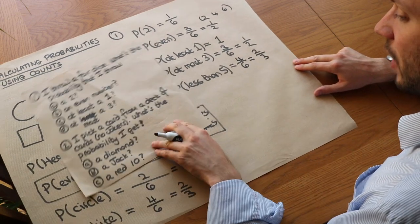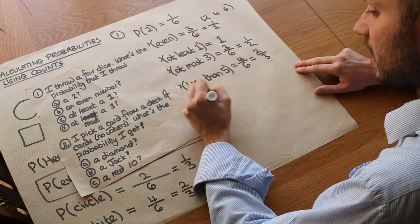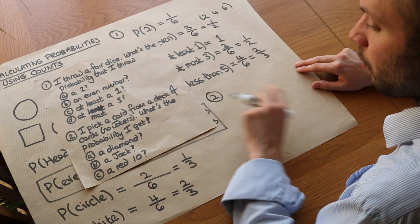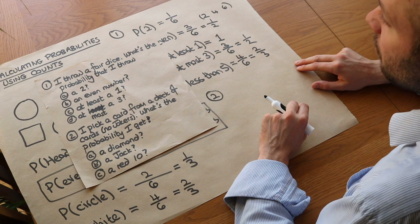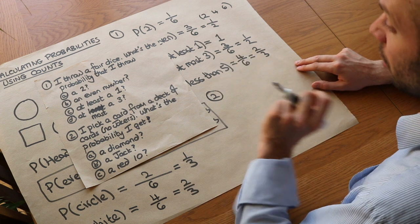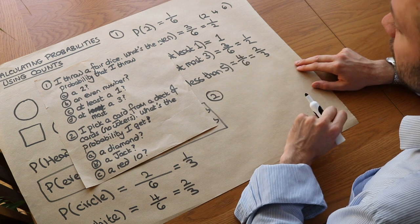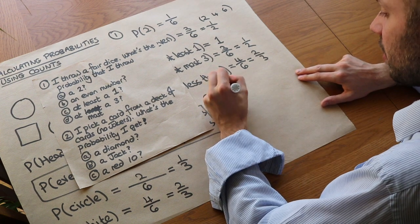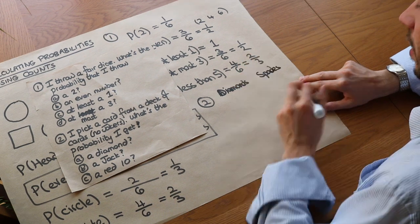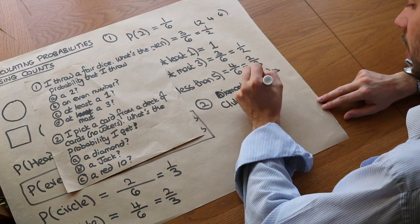And what about this second question? I pick a card from a deck of cards. There's no jokers in the pack. What's the probability I get a diamond, a jack and a red 10? Now if you're not familiar with cards, and this is why they don't ask questions about cards in GCSE papers, then you have four different suits. So you've got the diamonds, you've got spades, you've got clubs and you've got hearts.